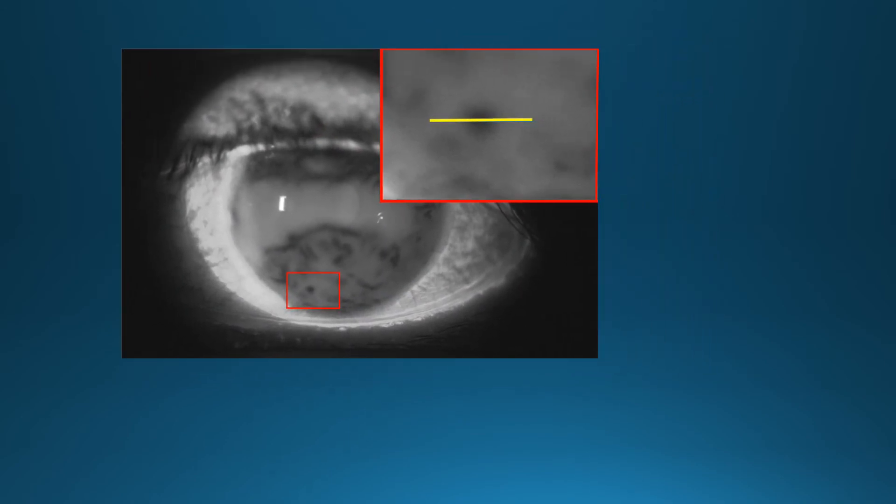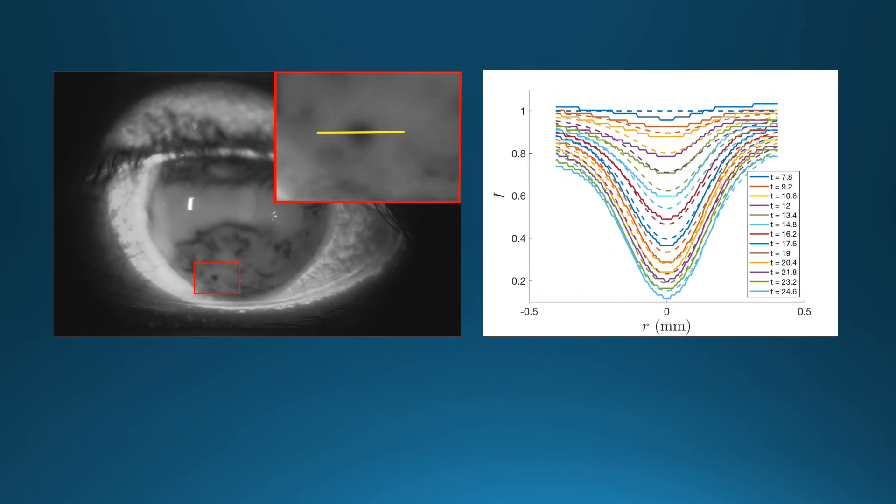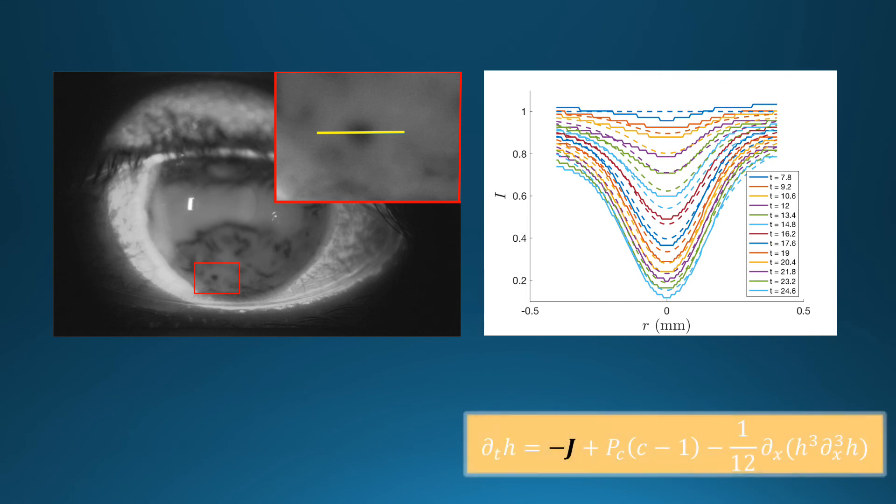By fitting the model to actual patient data, we obtain values for quantities that are built into our evaporation term, like the rate at which a spot is forming or its size. This is called parameter estimation.